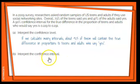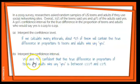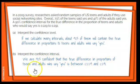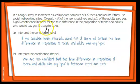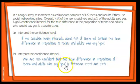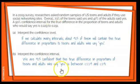For the confidence interval: 'We are 90% confident that the true difference in proportions of teens and adults who say yes is between 0.229 and 0.291.' It's stated right there — all I have to do is use that framework for confidence interval interpretation.